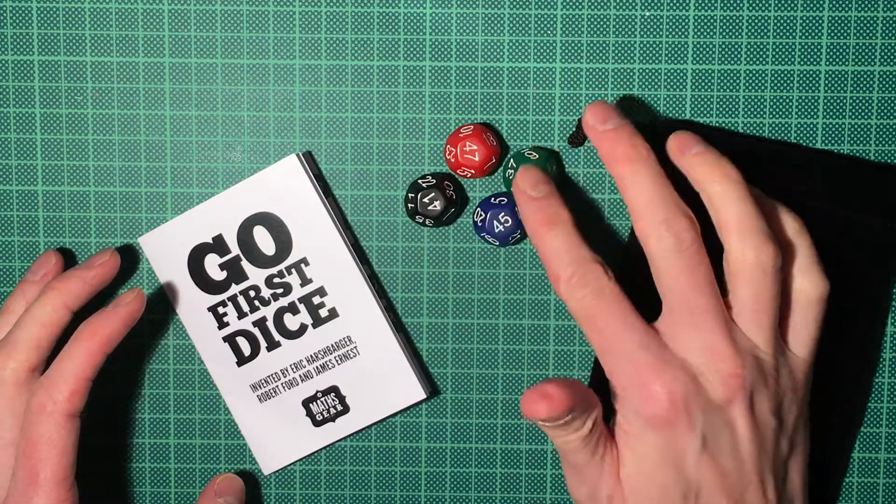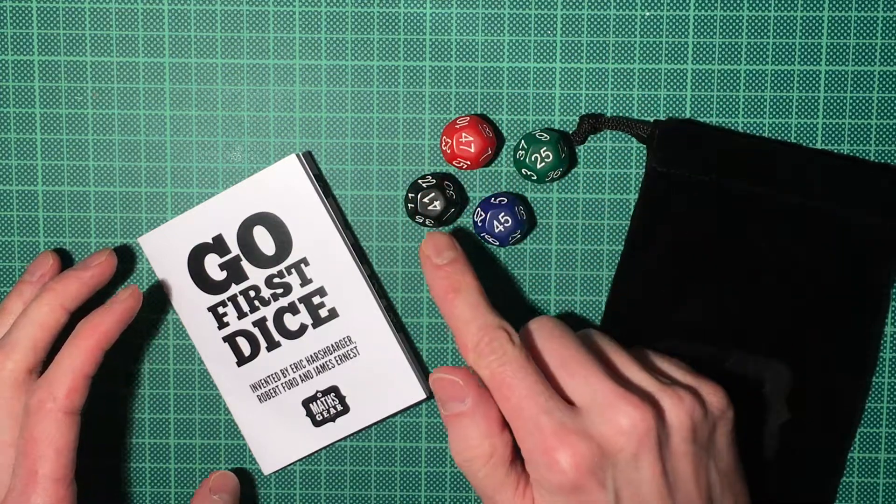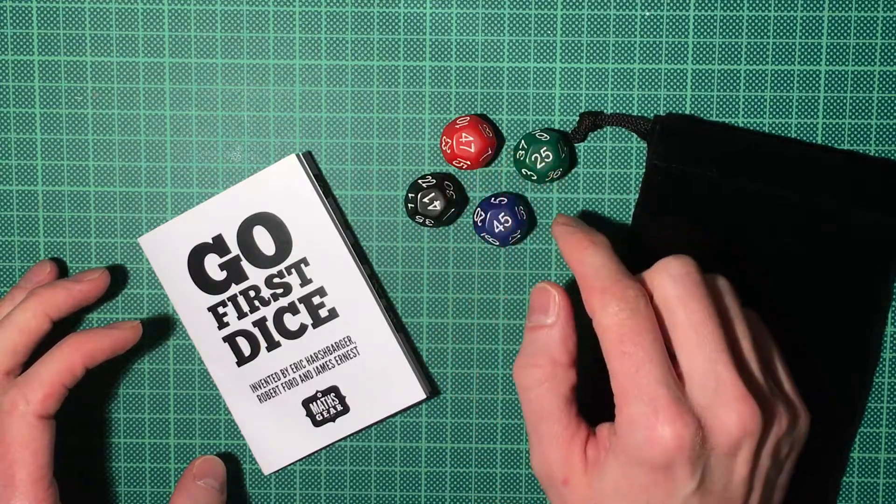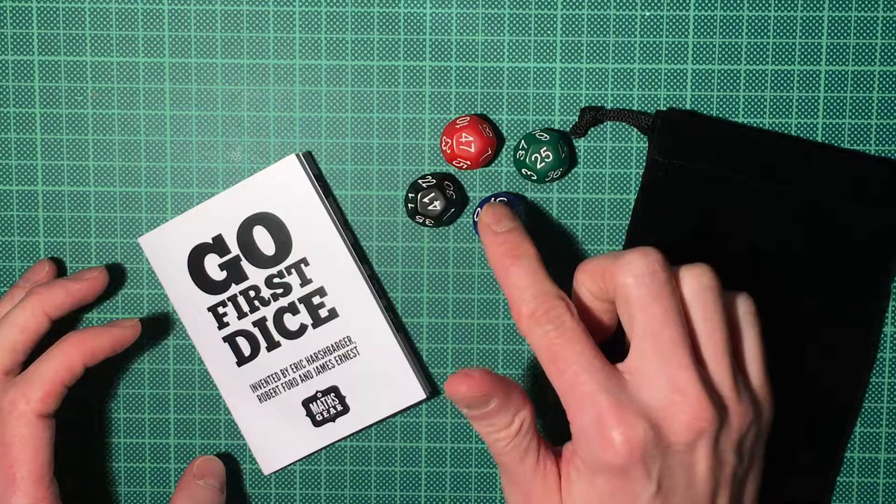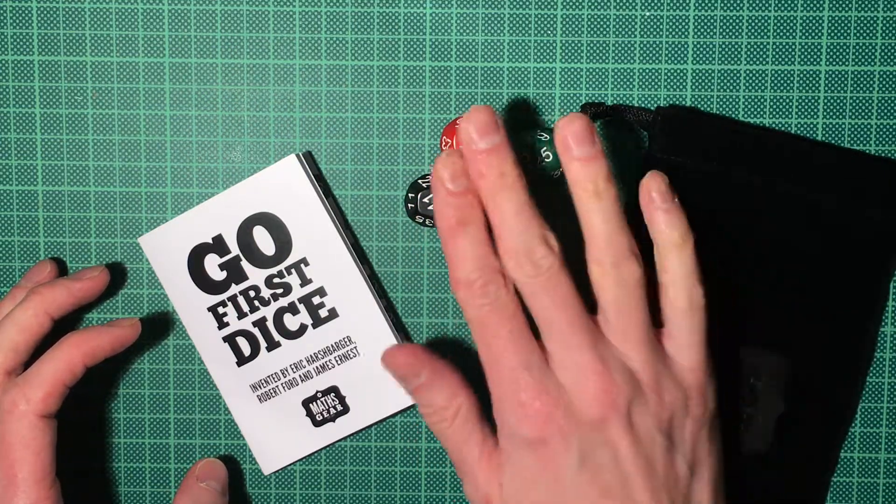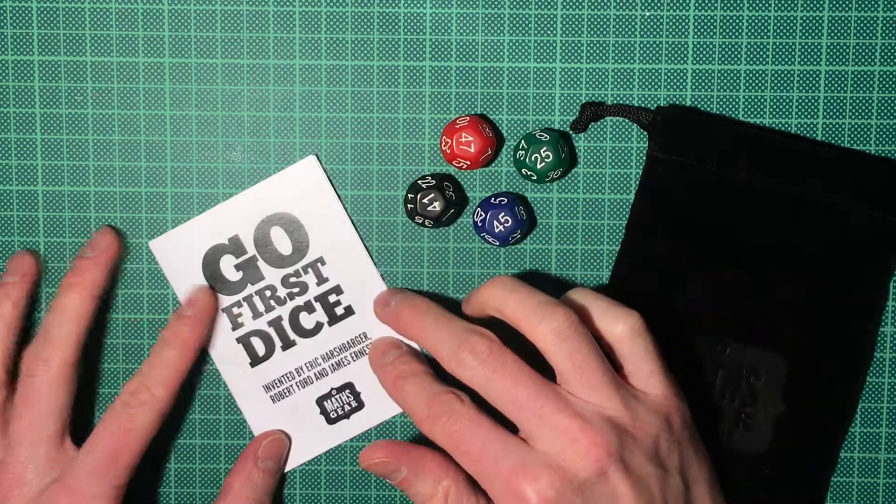They are arranged in such a way that whenever you roll two, three, or four of them, they will never tie and you will always have an absolute order of the dice so that you can use them, for example, to determine who goes first in a board game.